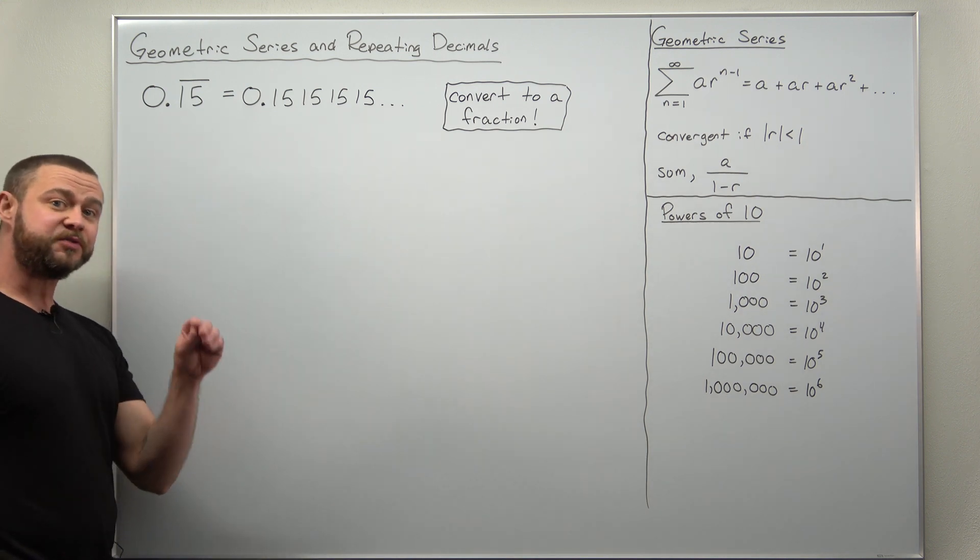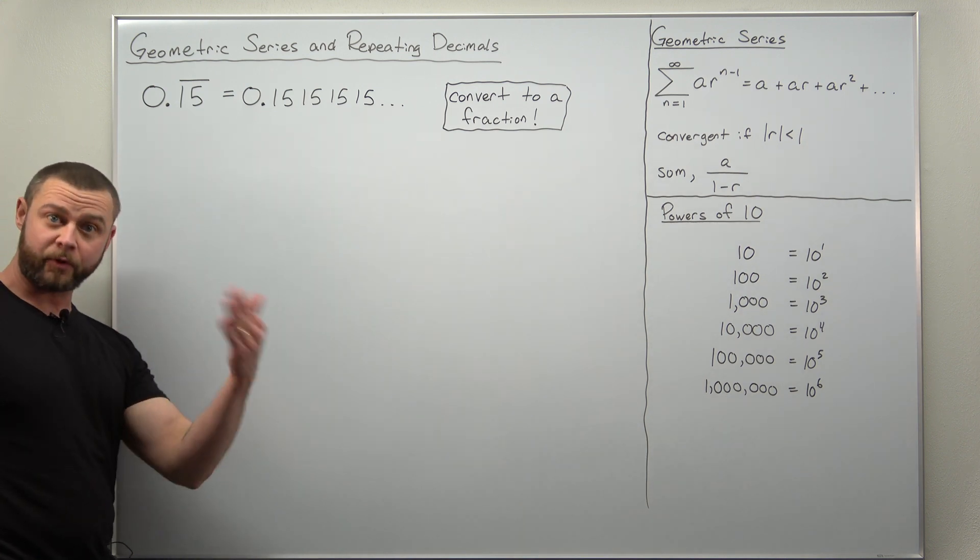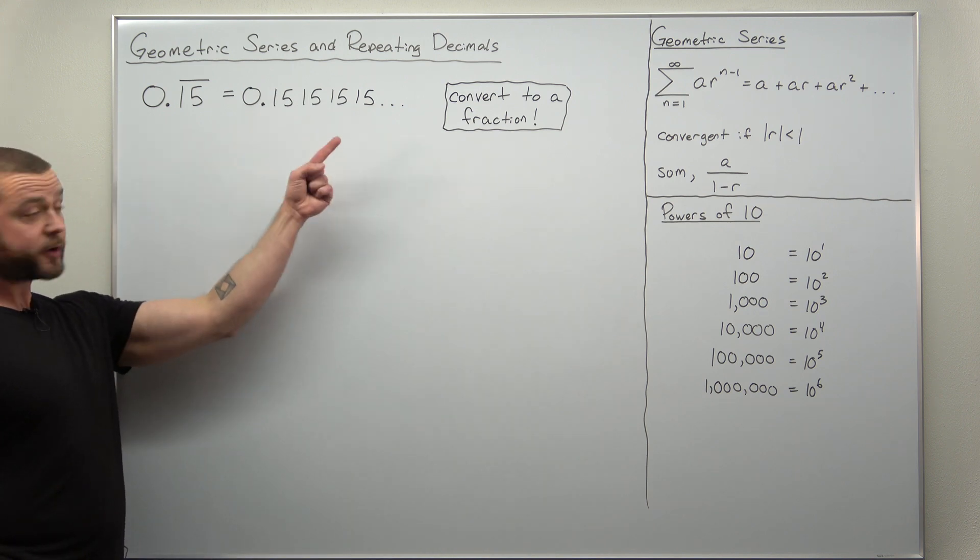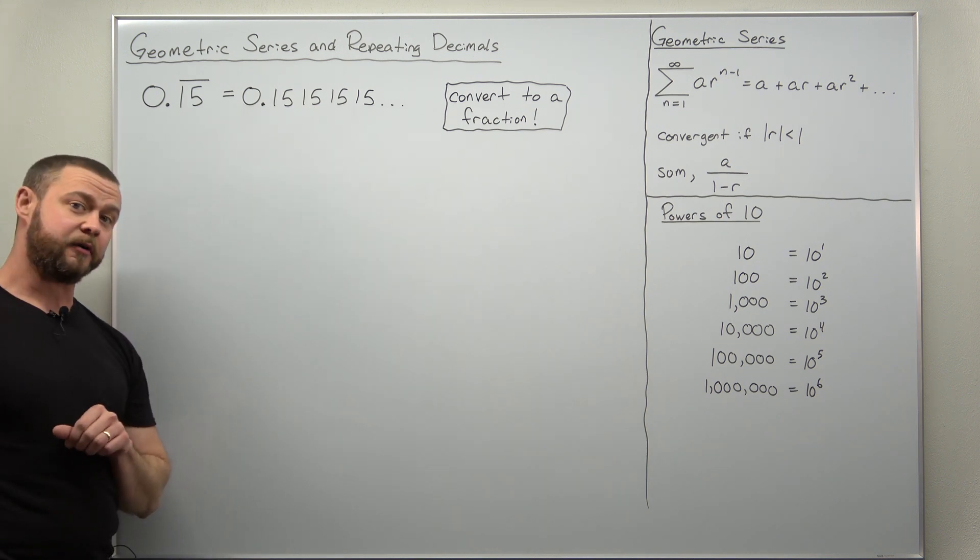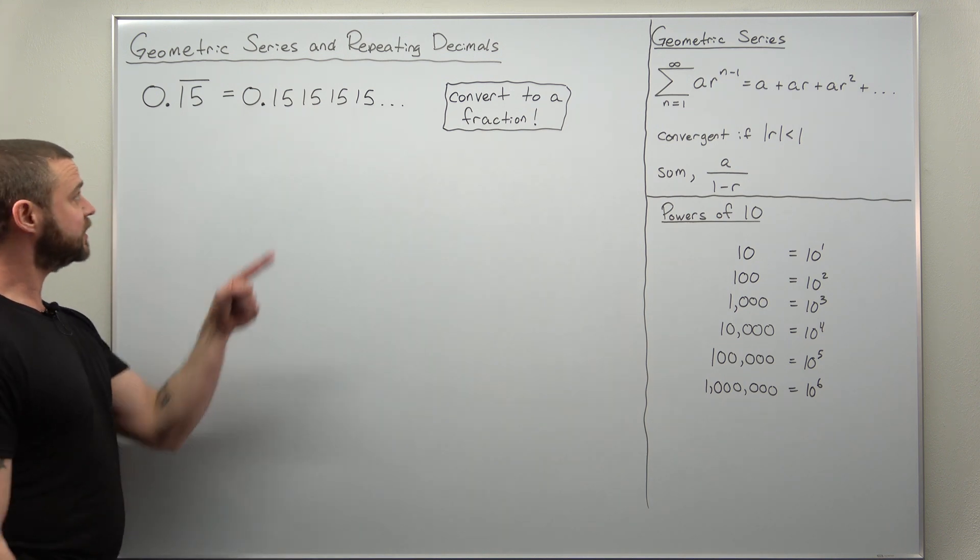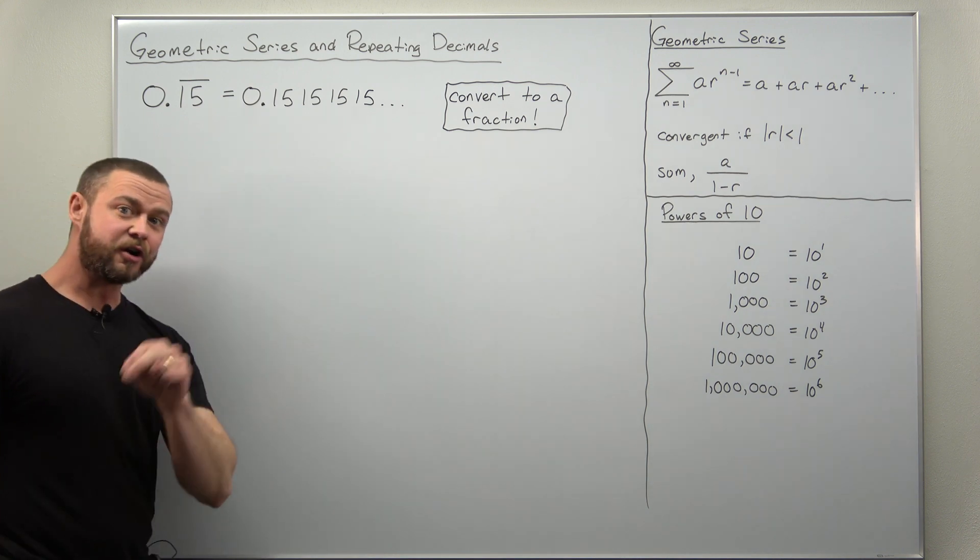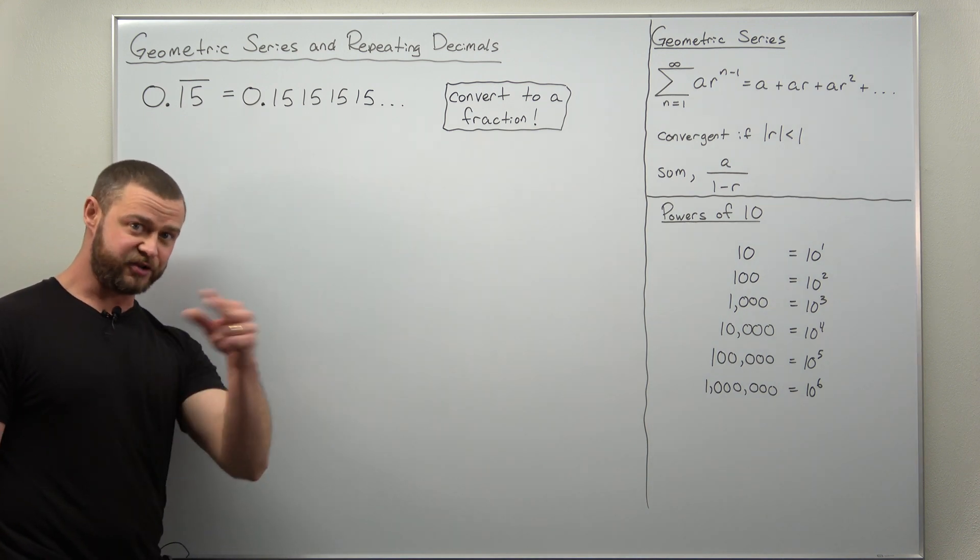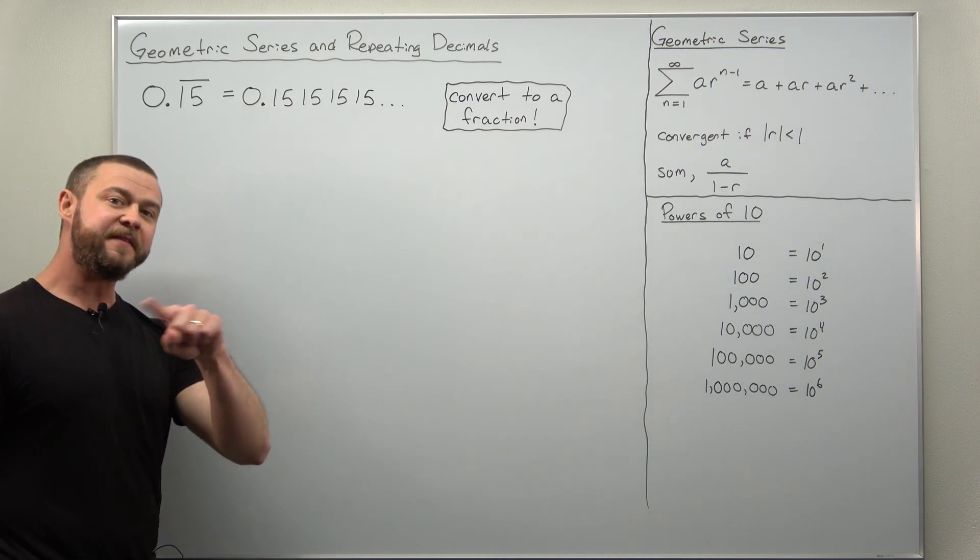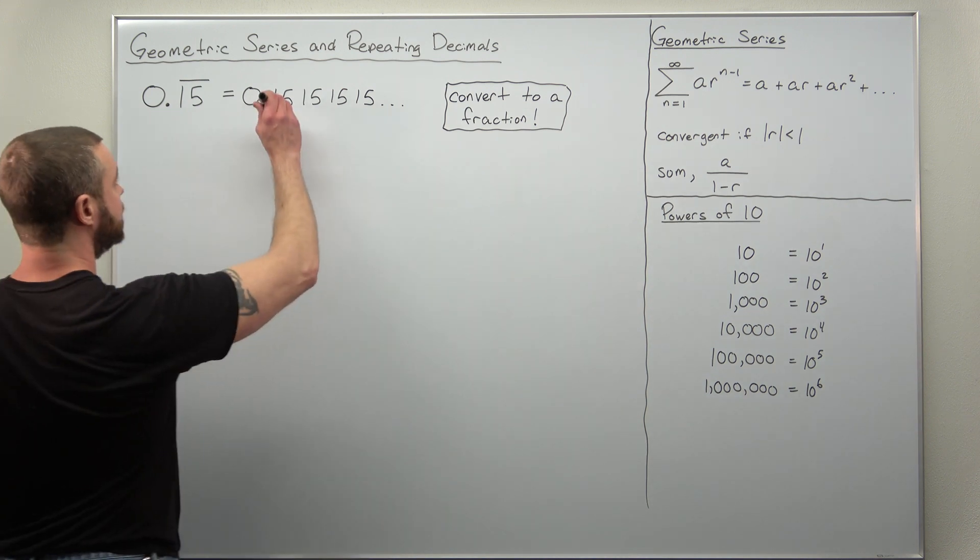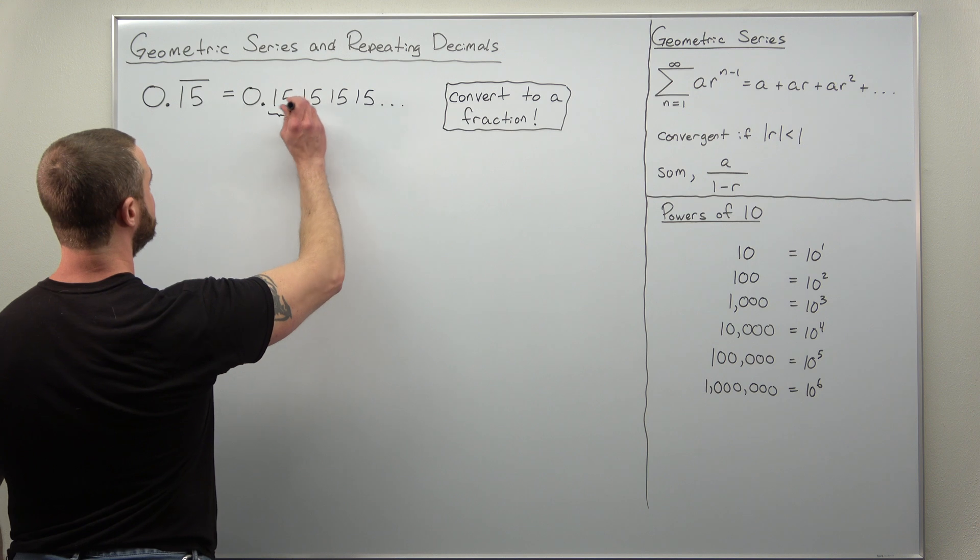Let's say our repeating decimal is 0.15 repeating. So our number here has in its decimal representation 1515 repeating forever. Now what we're going to notice is that this occurs in two digits in the decimal representation. We're going to think of that as being 15 over 100. So we're going to group these in twos.